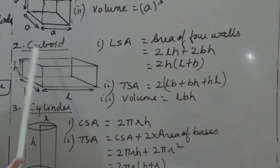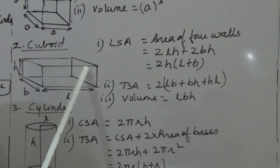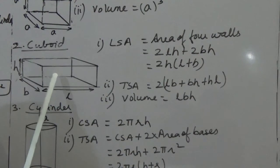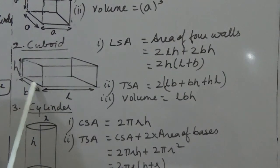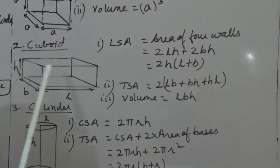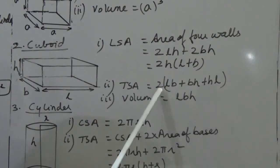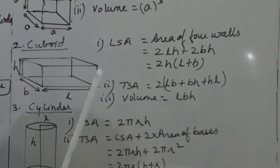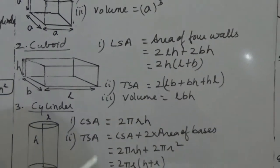For total surface area, we find the area of every face. There are two faces each of L×H, L×B, and B×H. Taking 2 common, the total surface area of a cuboid is 2(LB + BH + HL). The volume of a cuboid is L × B × H, that is LBH.